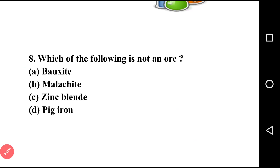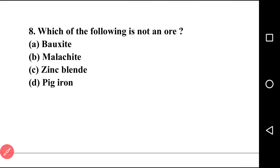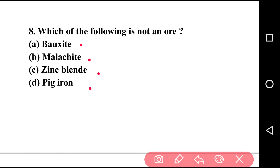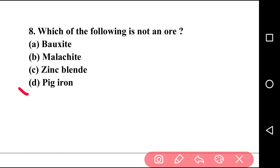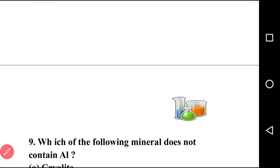Going to next question, that is question number eight: which of the following is not an ore? There are four options: bauxite, malachite, zinc blende, pig iron. The right answer is option D, that is pig iron. Pig iron is one type of iron — it is not an ore.